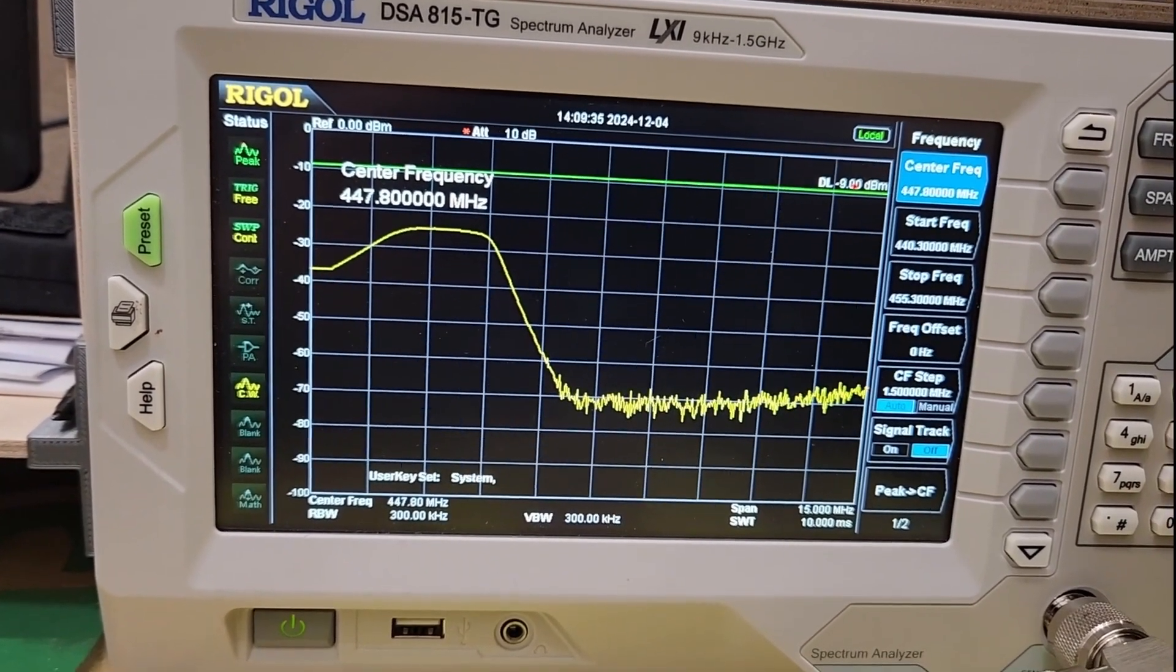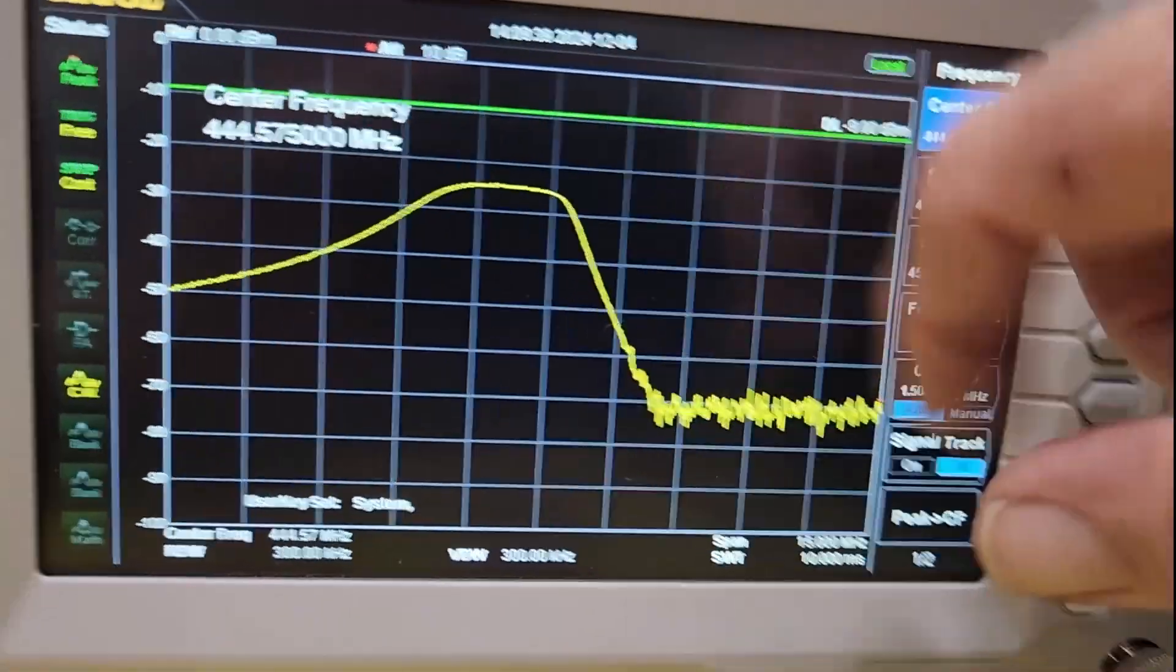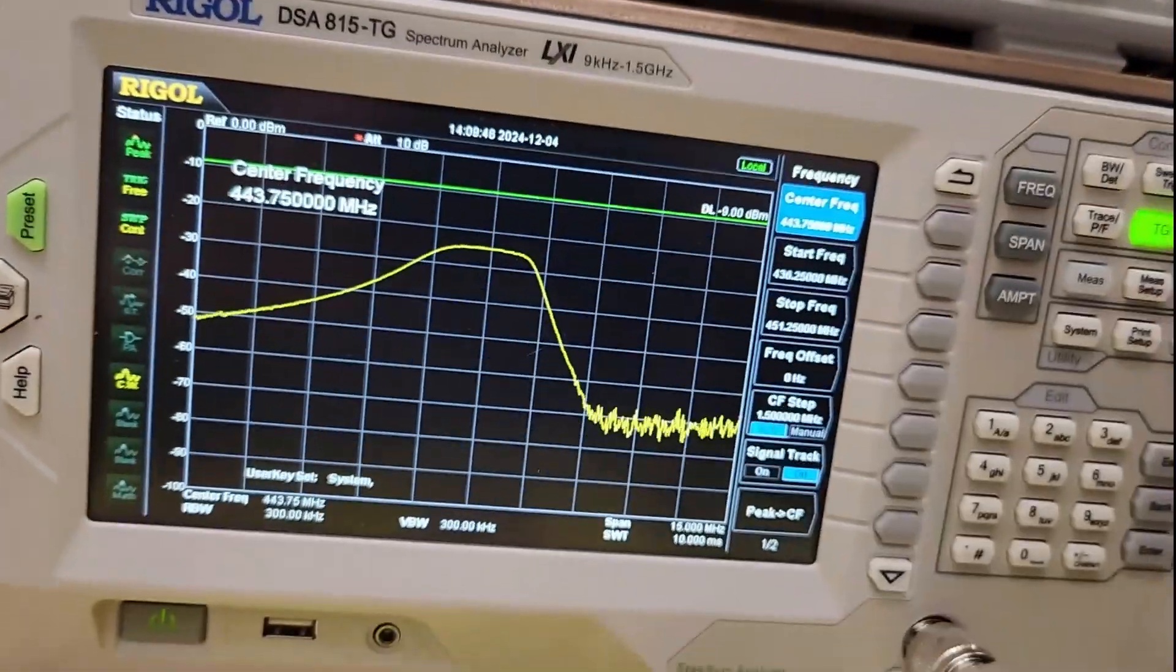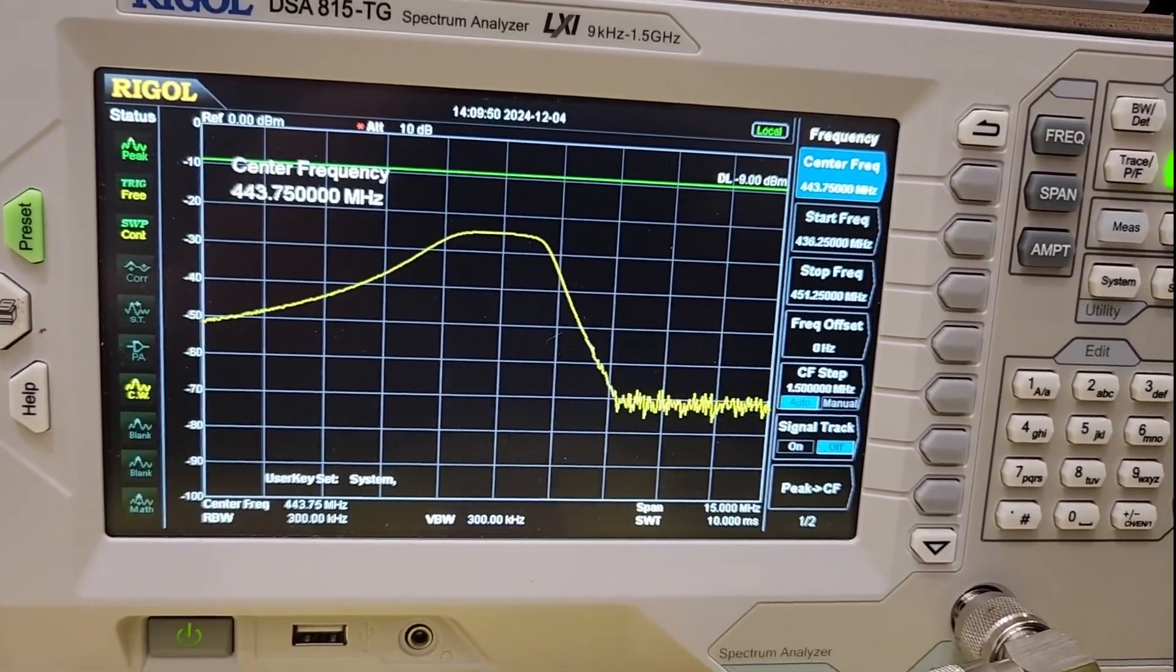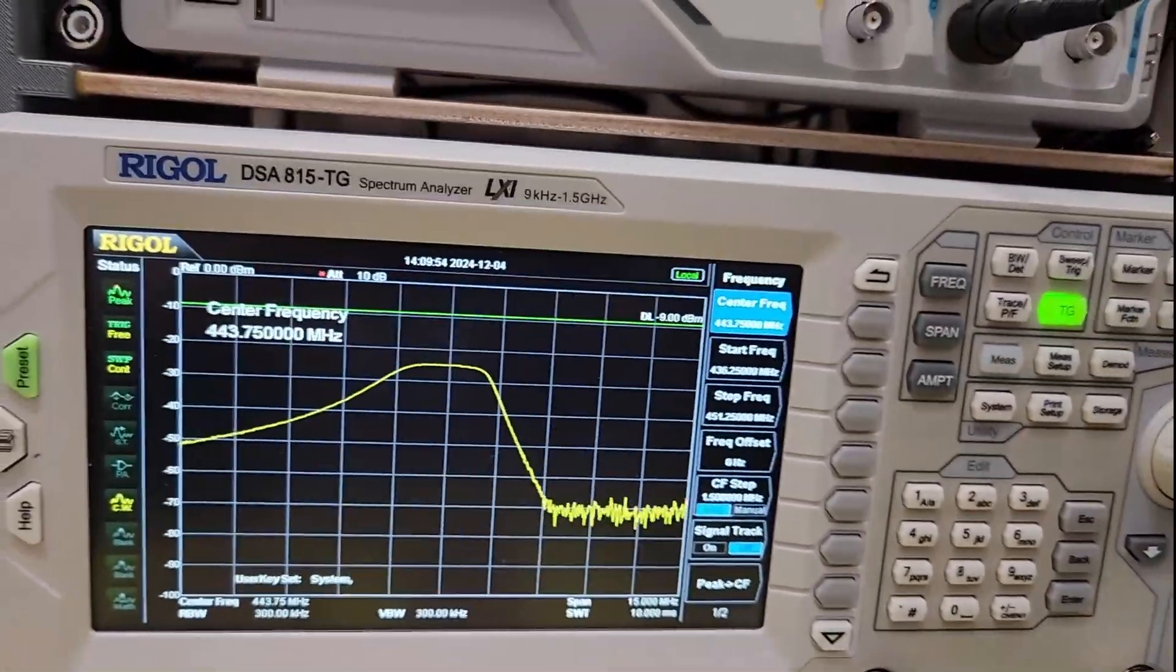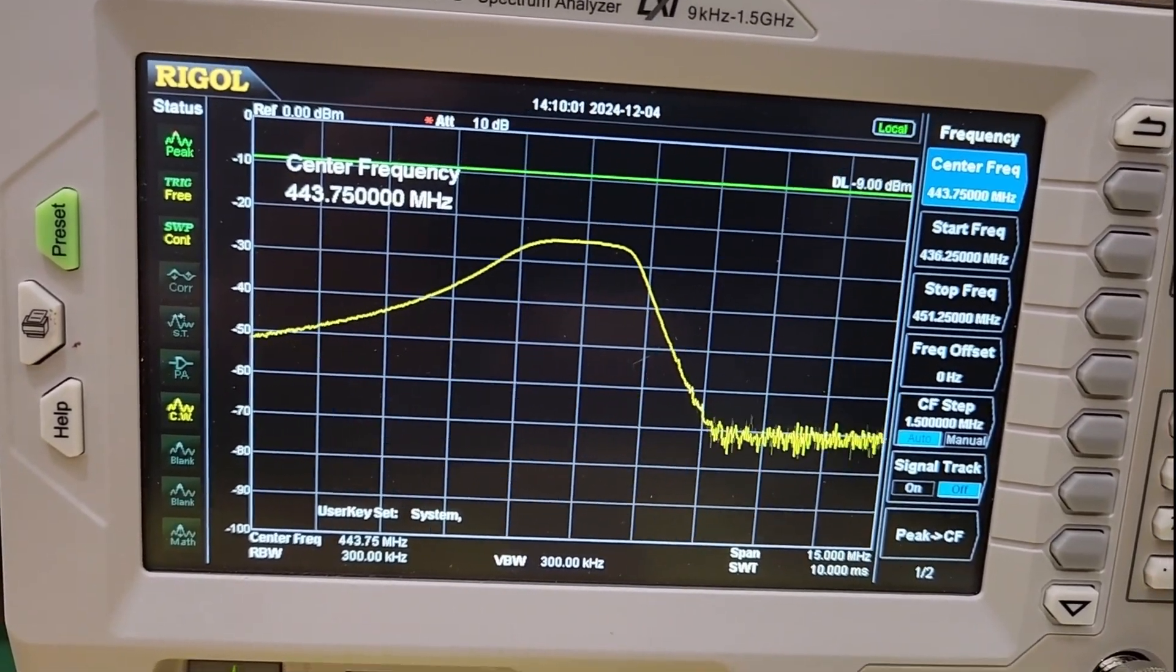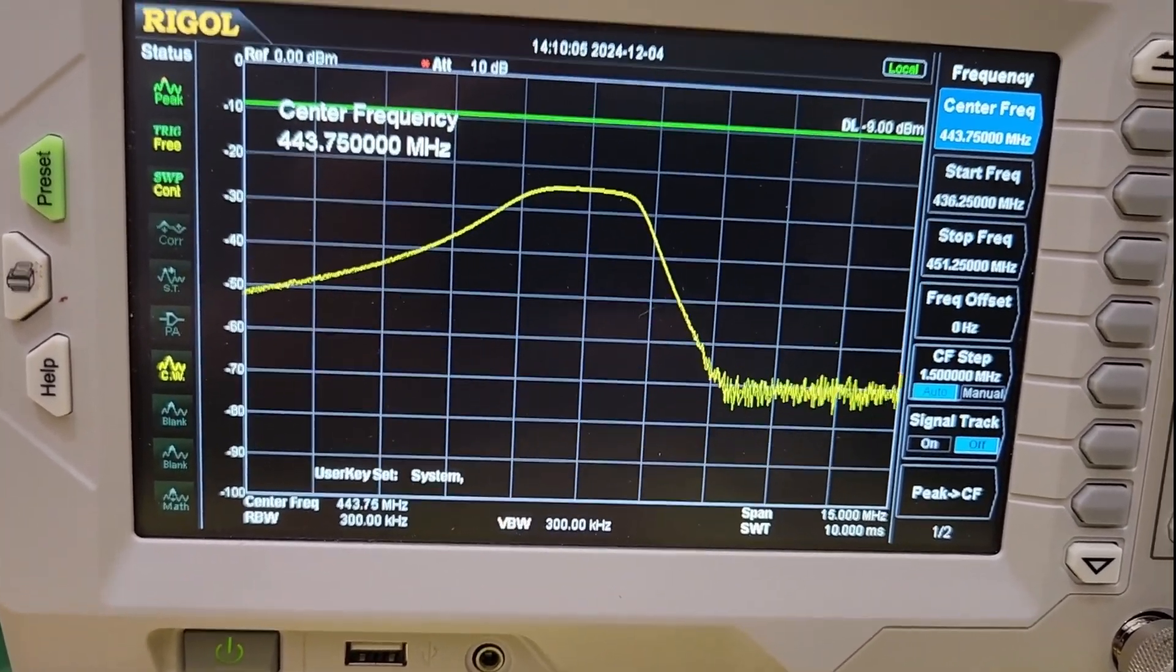From there, we just tune until we find it. There's our bandpass and our reject is just over here. Here's our pass, and we can see here that we're tuned roughly 443, so it's in the ham band. We need to move it up. We're going to have to move this lower frequency from 443 to 462, and likewise the higher side from 448 to 467.